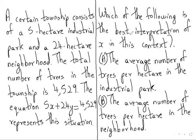They have asked for the interpretation of x in this context, so we look at the equation. With x we have 5, and they have said the township consists of a 5 hectare industrial park and a 24 hectare neighbourhood. So 5 hectare corresponds to the industrial park and 24 hectare to the neighbourhood. Since x is with 5, it has to be associated with the industrial park.